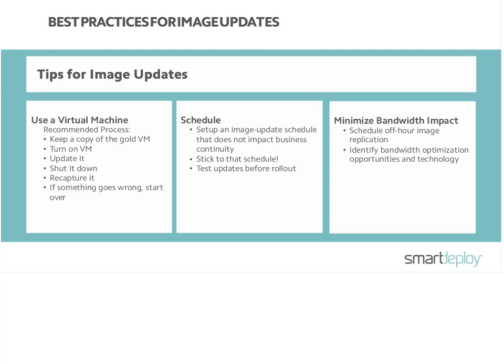Best practices for image updates: use a virtual machine — it's really handy and portable. It's easier to fire it up, make updates, and shut it down. If something goes wrong, you can use snapshots, experiment, and roll back easily. Stick to a schedule — you don't want business continuity to get in the way of your imaging. Make sure updates work before deploying, do things on off hours, and look for technologies that support deduplication or deltas to keep reapplication of images efficient.